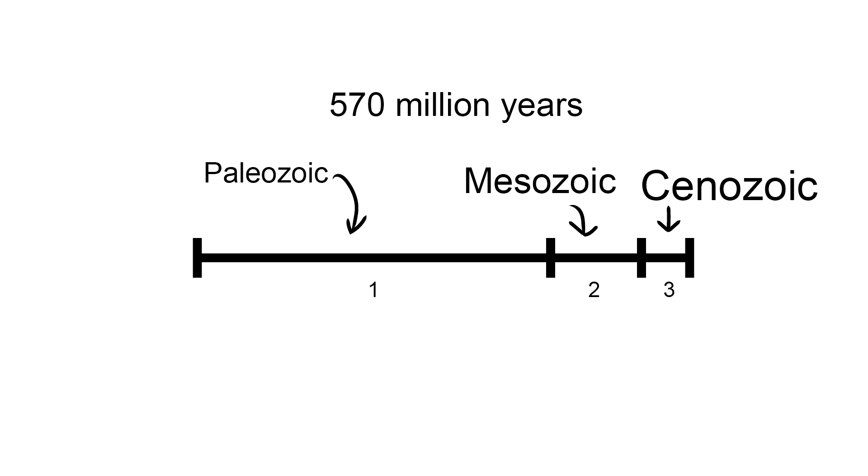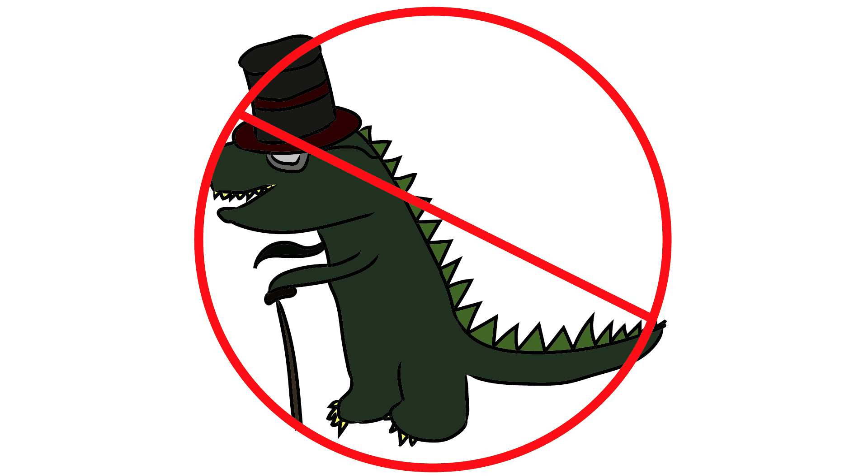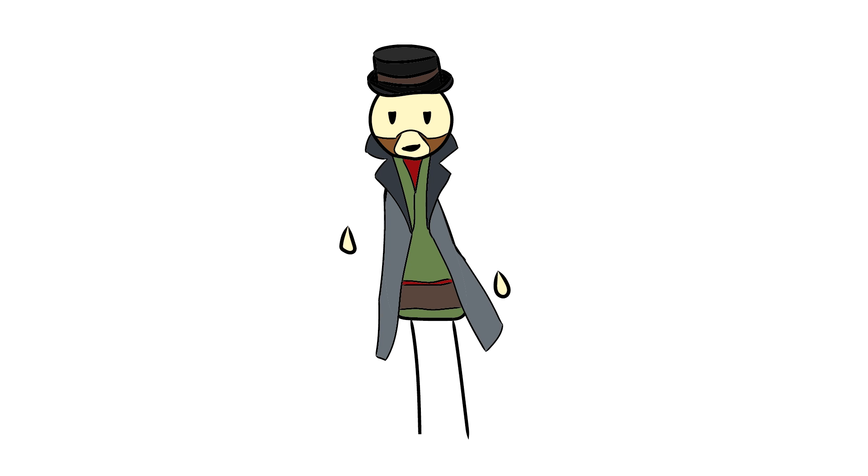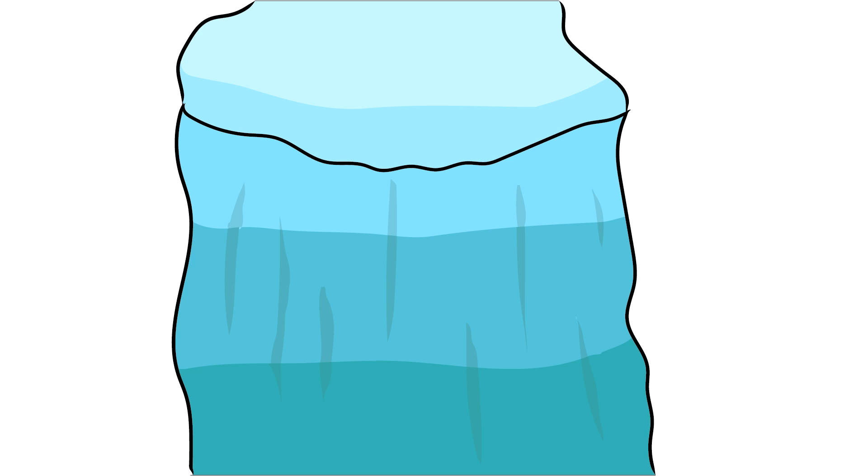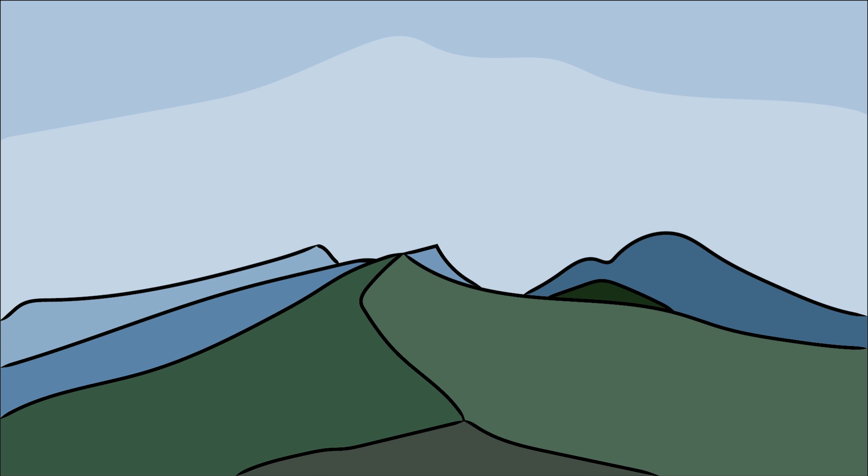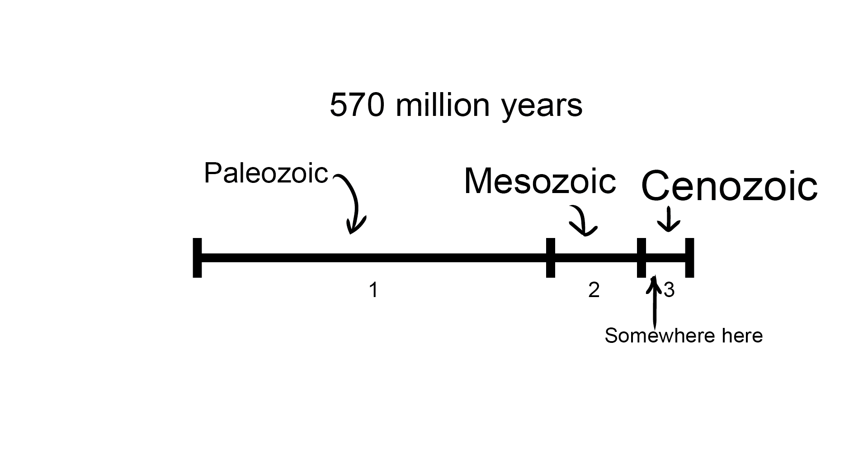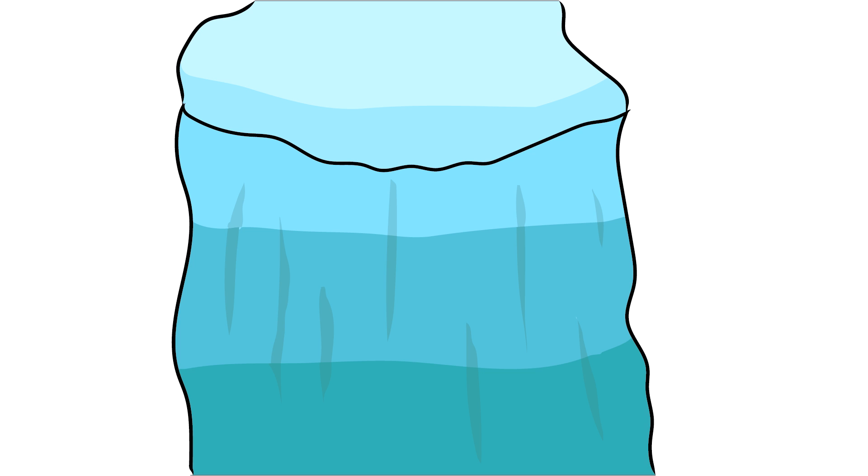The reason why Cenozoic is known as that is because dinosaurs died out, allowing mammals such as humans to become more dominant. Also during this era, the world had an Ice Age 2 million years ago. Glaciers during this period were like large pieces of sandpaper that gouged the Earth's land. Because of this, the Appalachian Mountains and Canadian Shield were rounded. The last Ice Age was 6,000 years ago, but glaciers still stand today.